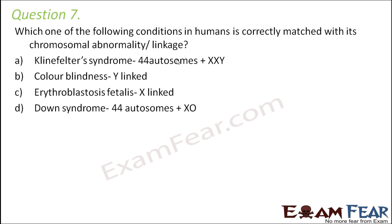Klinefelter's syndrome: 44 chromosomes plus XXY. That is correct because in Klinefelter's syndrome, this is a chromosomal abnormality where in the sex chromosomes you have an additional X chromosome. In case of males, you have an additional X chromosome; in case of females, you have an additional Y chromosome. So basically instead of XX or XY, you have XXY — that is Klinefelter's syndrome. So this is correctly matched.